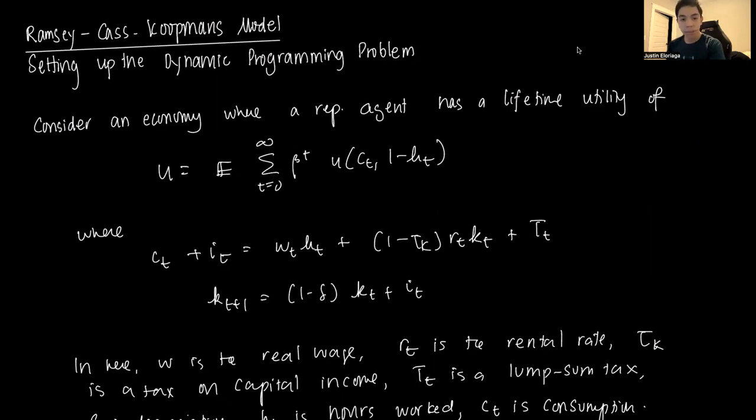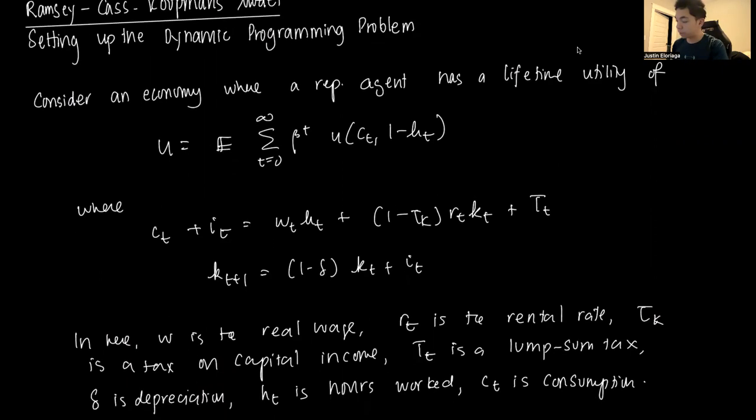So consider an economy where we have a representative agent that has a lifetime utility. And the lifetime utility is a function of consumption, that's Ct, and then we have 1 minus Ht, which is leisure.